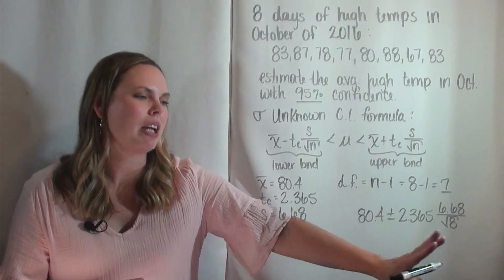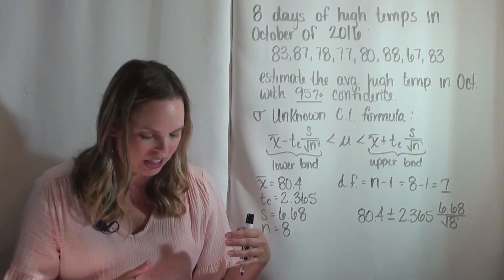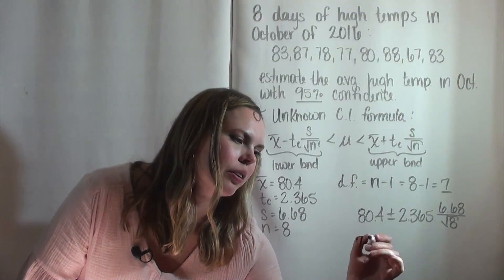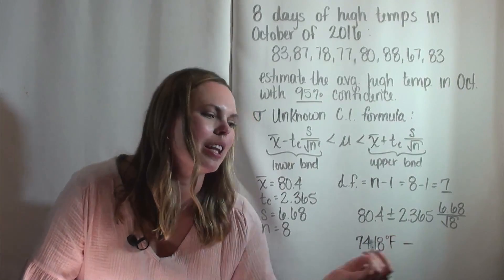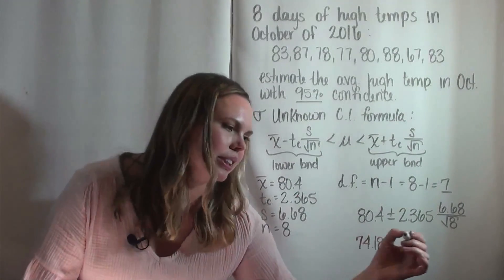I'm going to plug this into my calculator. I'm going to do it with a minus sign first to find the lower bound and I got 74.18. I'm going to put degrees Fahrenheit on that. And then my upper bound, when I use the plus sign, I get 86.6.